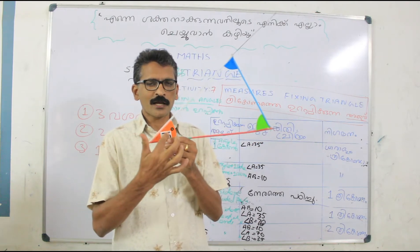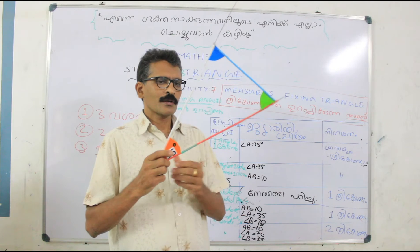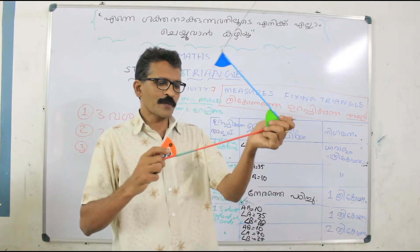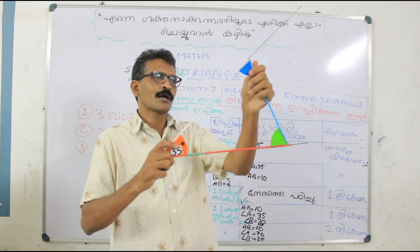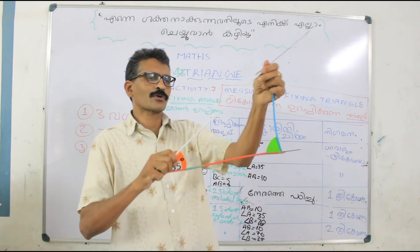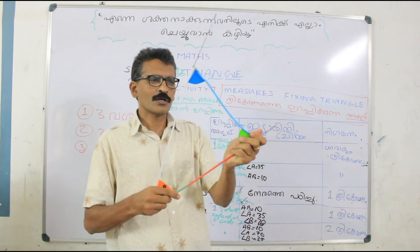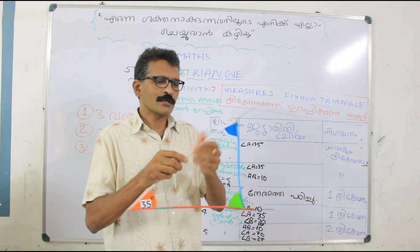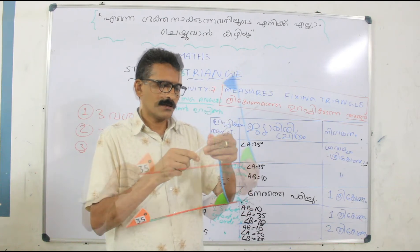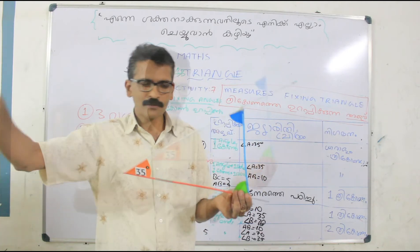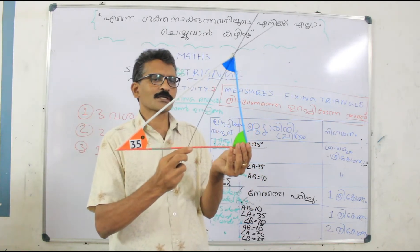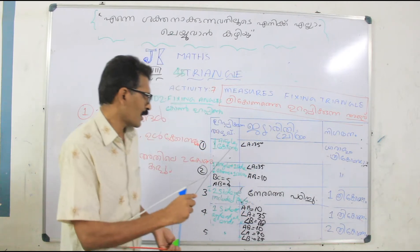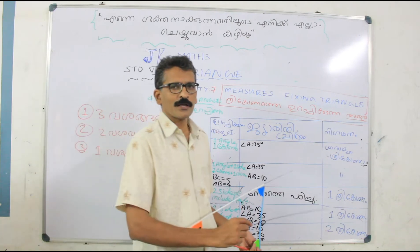Consider an angle of 35 degrees. The arms of the angle extend to infinity, so if the arms are moving, we will get a lot of different triangles. If we know only one angle, we cannot make a unique triangle — we can get a lot of triangles at any position. So if we know only one angle, the triangle cannot be fixed.